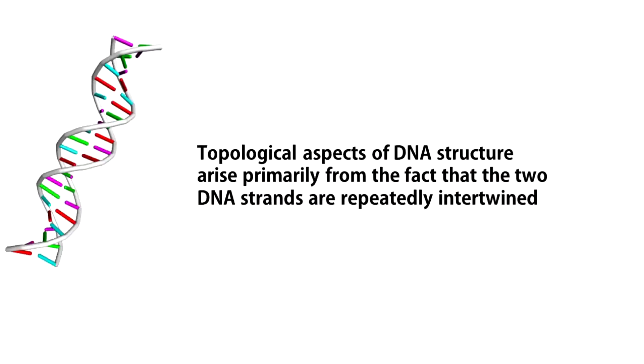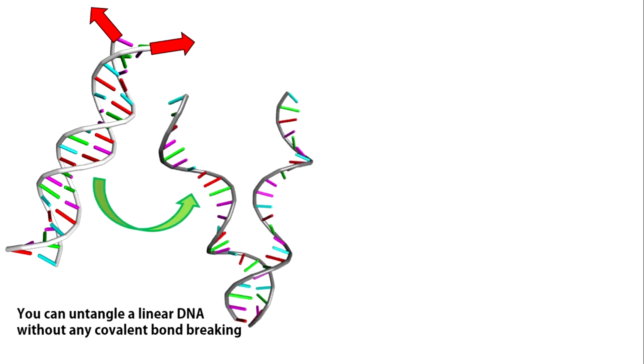Topological aspects of DNA structure arise primarily from the fact that the two DNA strands are repeatedly intertwined. Let us think about how to untangle these two strands. Consider a simple case of a linear DNA in solution. You can untangle the two strands just by pulling them in two different directions. No covalent bonds are breaking.